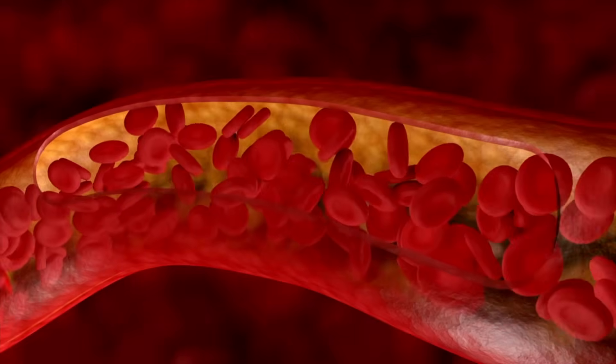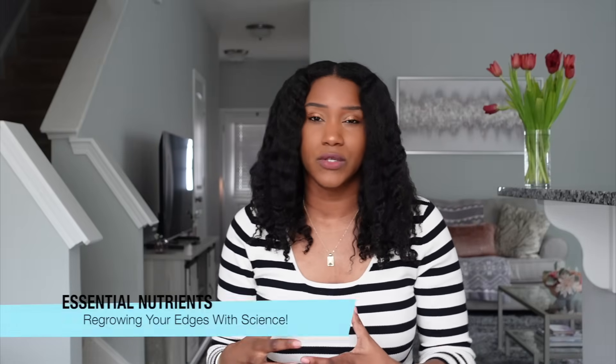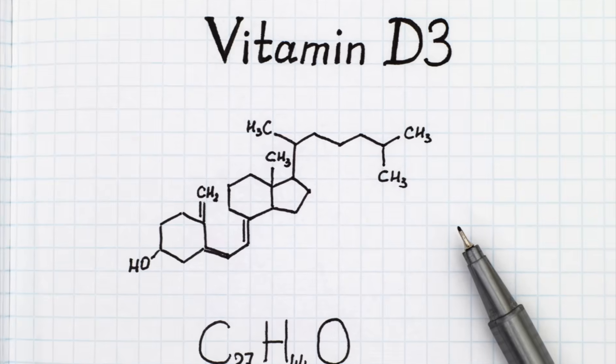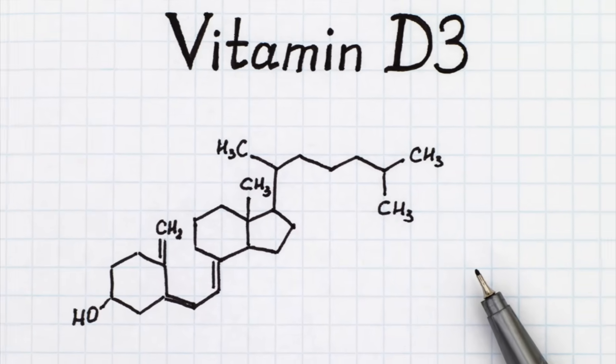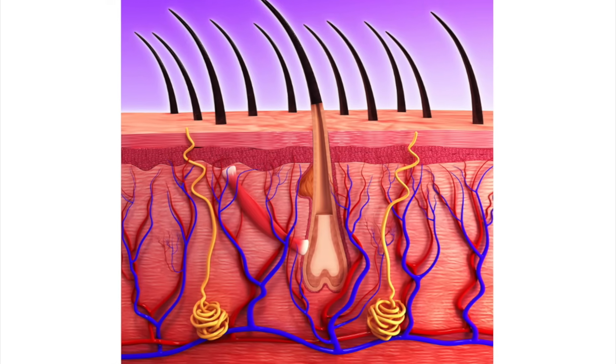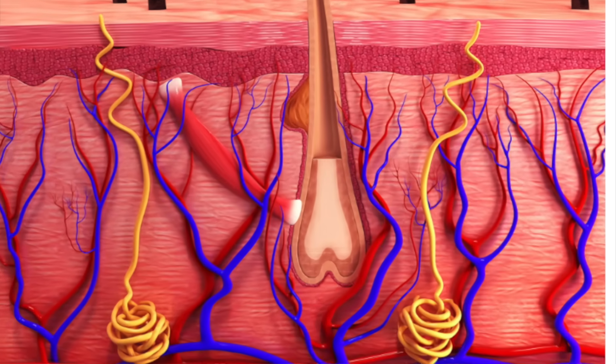Now let's talk about how to reverse that and regrow your edges, focusing on the internal process. It comes down to blood flow and nutrients. When there's a lack of blood flow, that means a lack of oxygen, which means a lack of hair growth. Iron and vitamin D are key nutrients for regrowing edges because they are responsible for follicle oxygenation — getting oxygen to the follicle so your hair can thrive, be healthy, and grow.